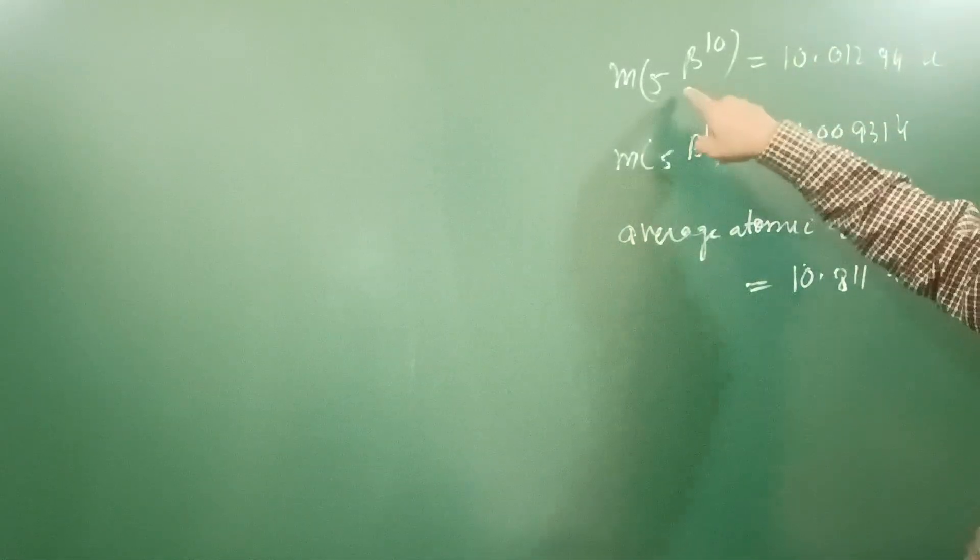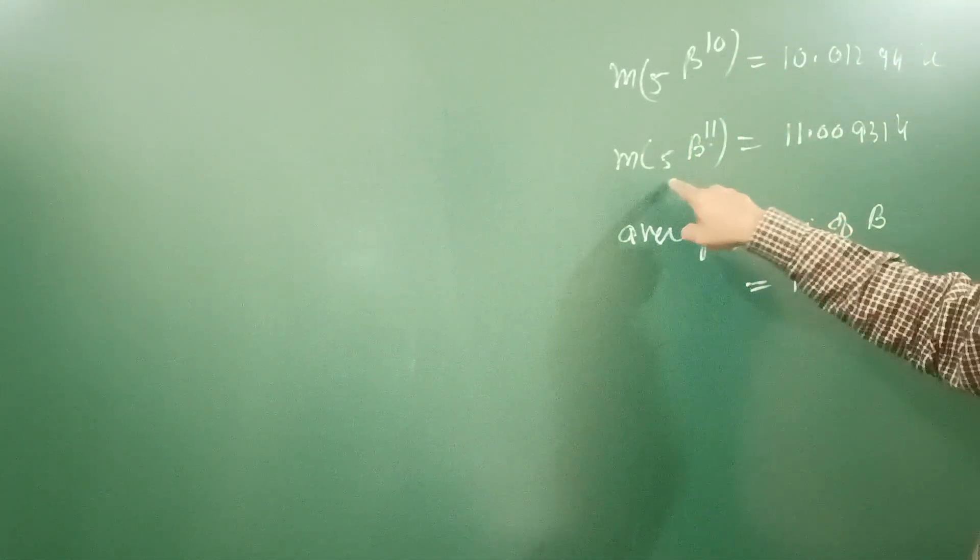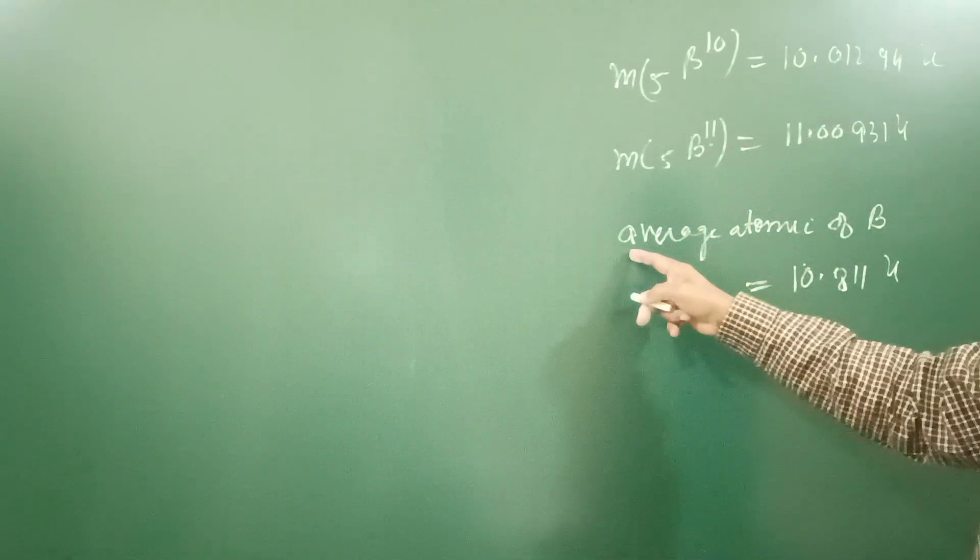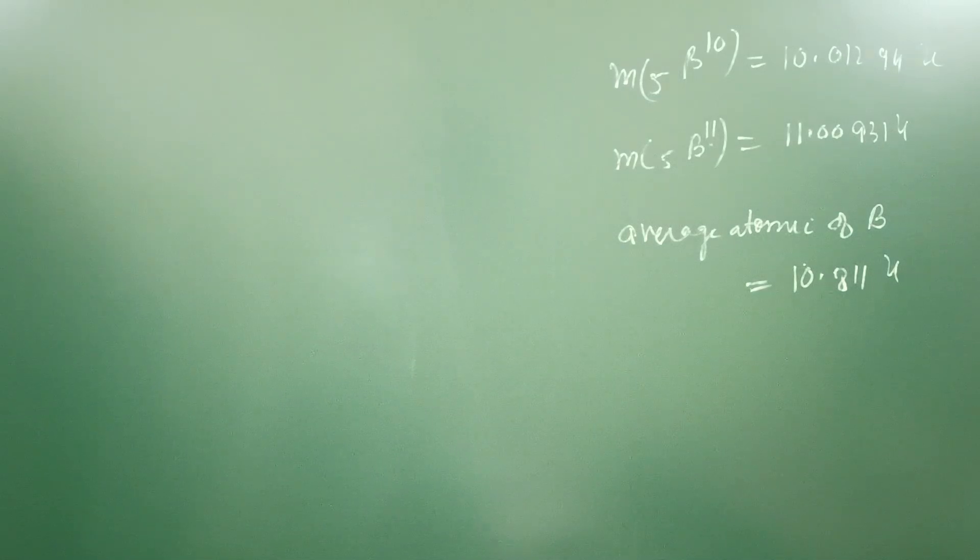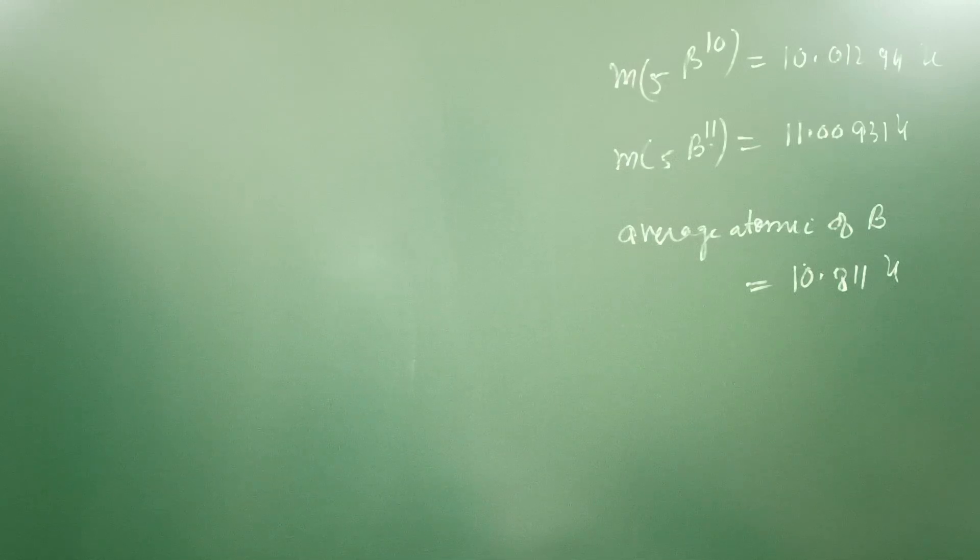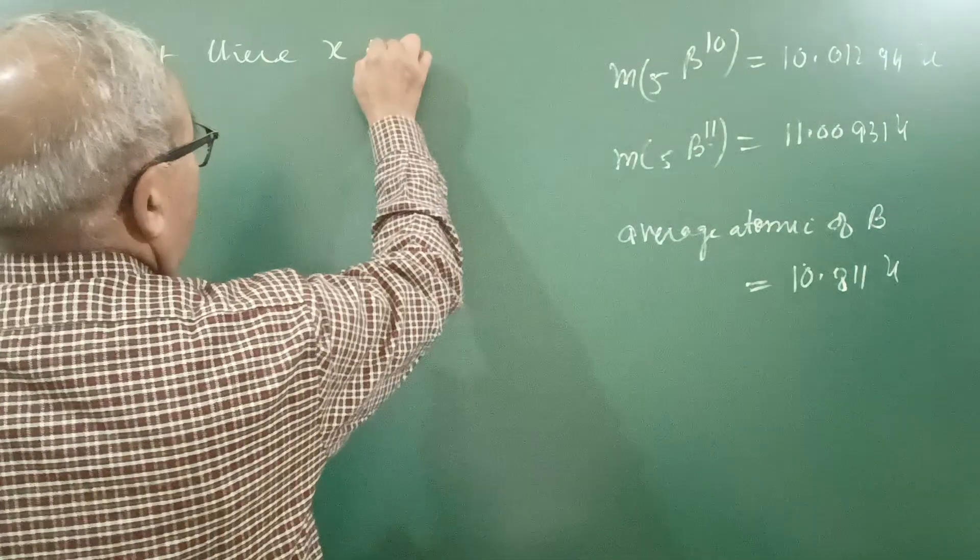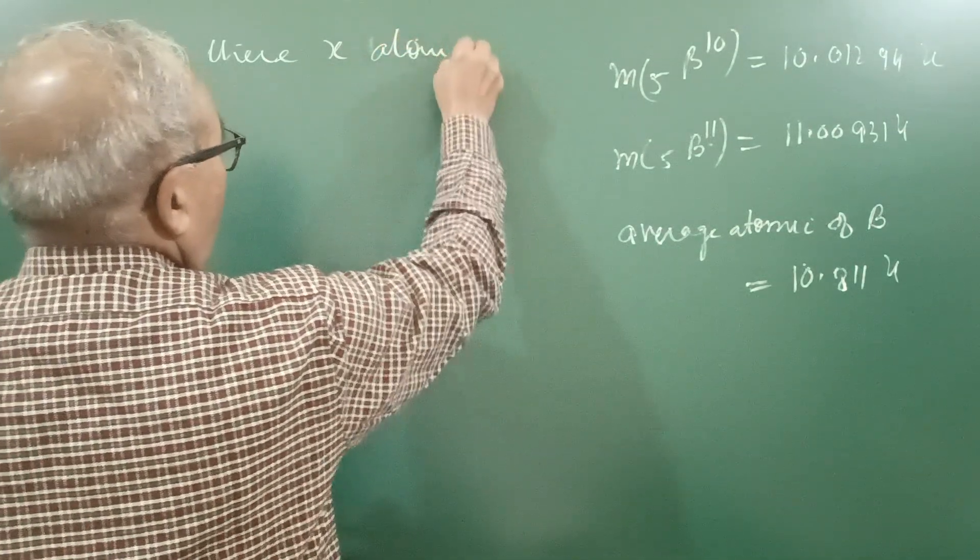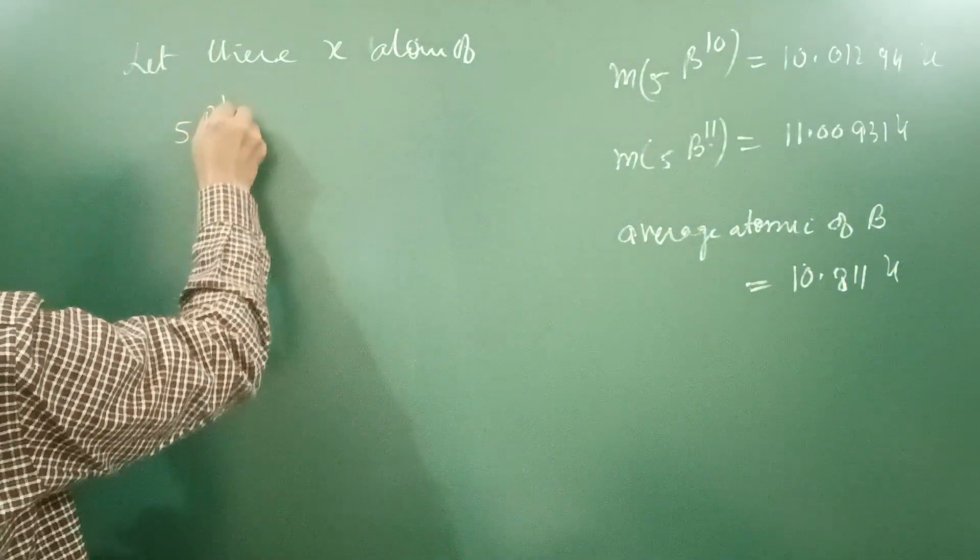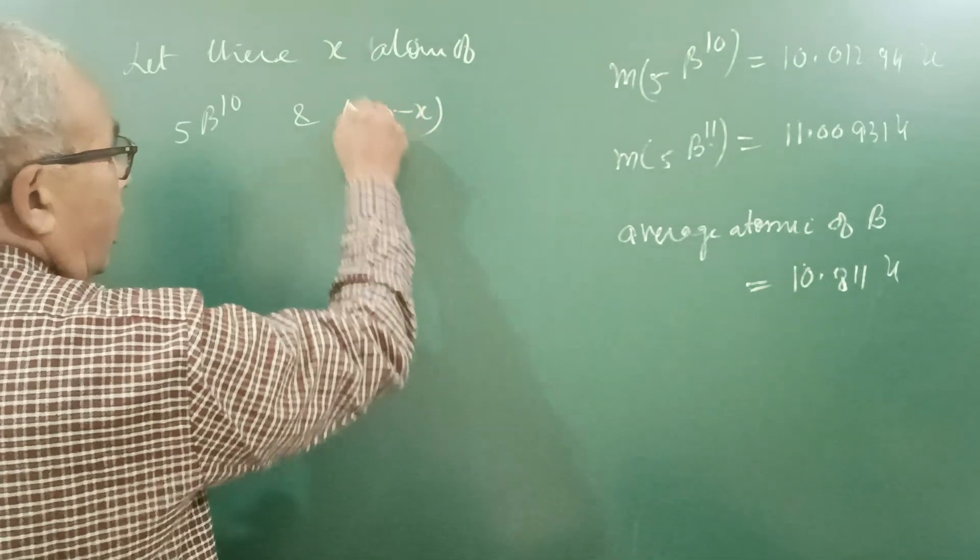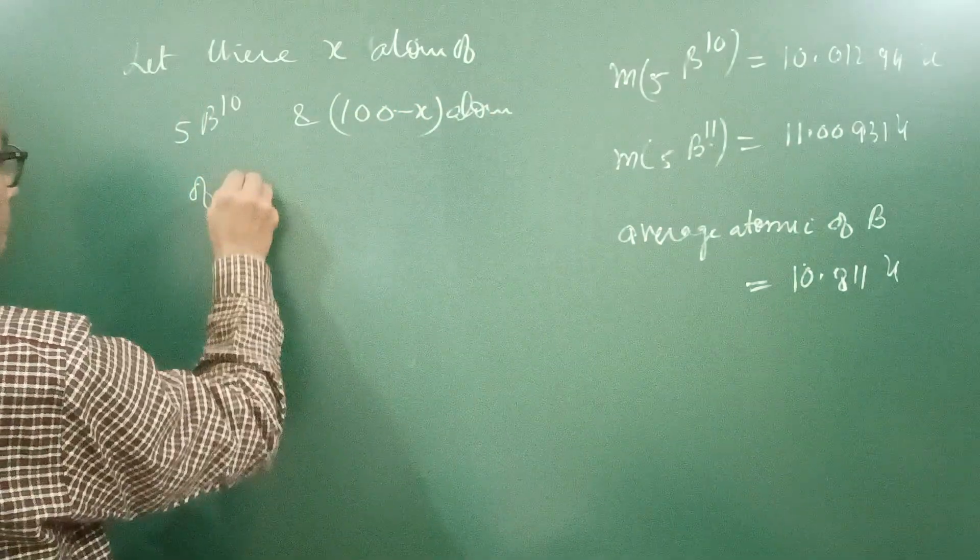You are given mass of boron-10, mass of boron-11, and the average atomic mass 10.811U. So you are asked to find the abundance of the two isotopes, how much percentage they occur. So to solve this, very simple method here.